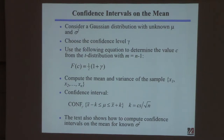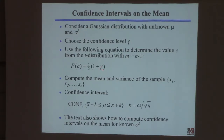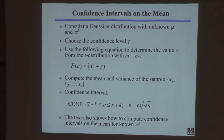So you have that number now. If you had 10 samples, degrees of freedom is nine, then you calculate this value here: one-half times one plus gamma. So once you know gamma, you can calculate this thing. If gamma is 0.95, that ends up being 0.975 for the f value.